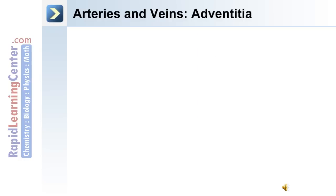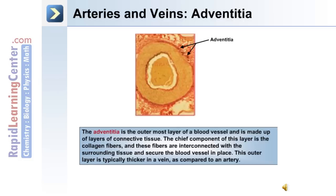The outer layer is the adventitia. This is the outermost layer and it's made up of layers of connective tissue. The chief component of the adventitia is collagen fibers, which are interconnected with the surrounding tissue and secure the blood vessel in place. The outer layer is typically thicker in a vein as compared to an artery.